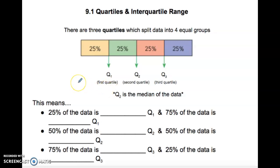So let's take a look at how this data is split up right now. 25% of the data is less than Q1. So if we look at Q1, 25% of the data is over here. So 25% is less than Q1, and 75% goes this way. So 75% of the data is greater than Q1.